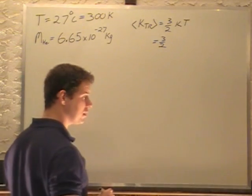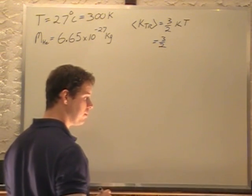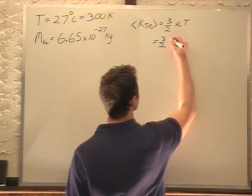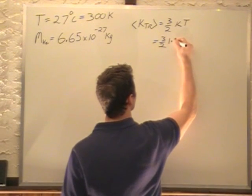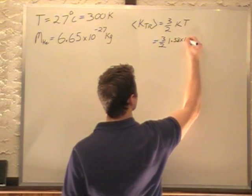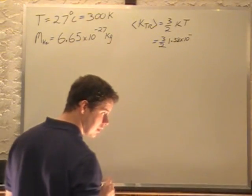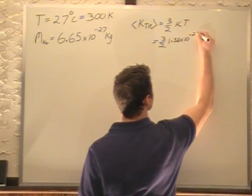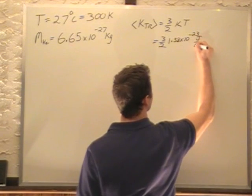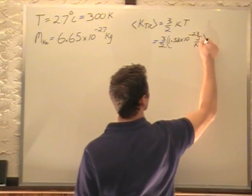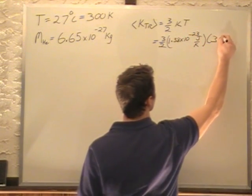k is Boltzmann's constant, and that's equal to 1.38 times 10 to the minus 23 joules per Kelvin, times 300 Kelvin.